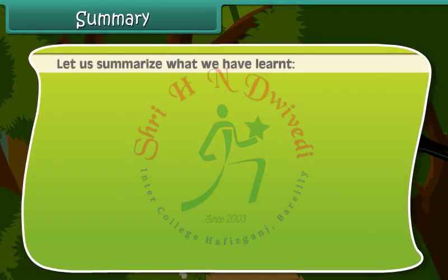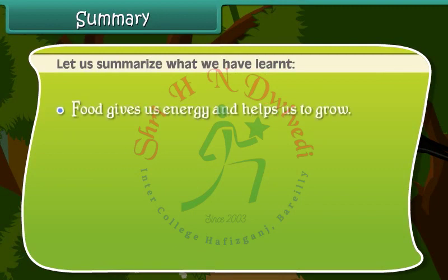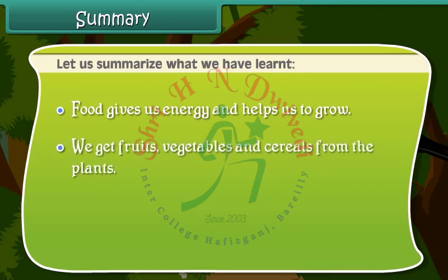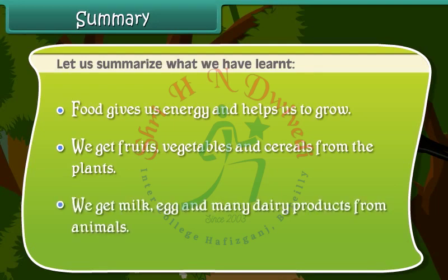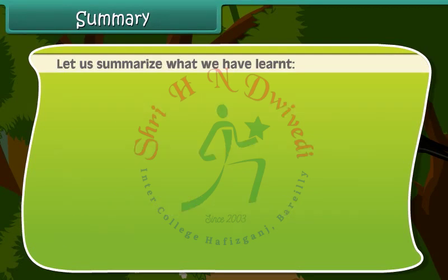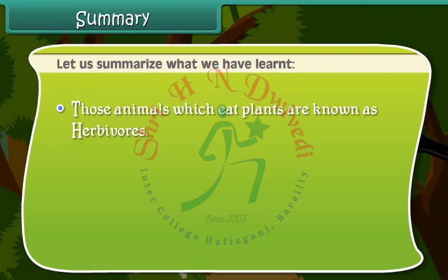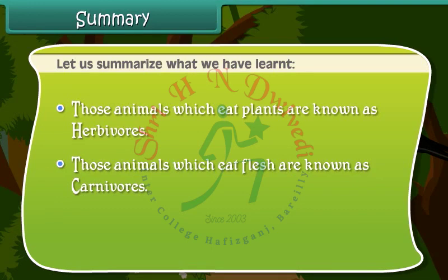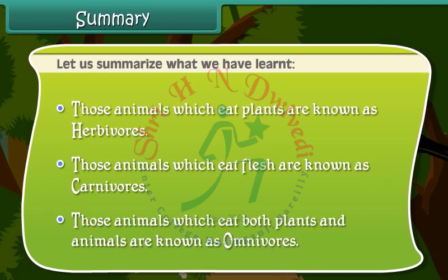Let us summarize what we have learned so far. Food gives us energy and helps us to grow. We get fruits, vegetables and cereals from plants. We get milk, eggs and many dairy products from animals. Animals which eat only plants are known as herbivorous. Animals which eat only flesh are known as carnivorous. Animals which eat both plants and animals are known as omnivorous.